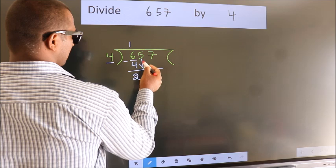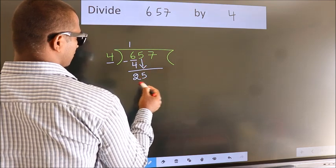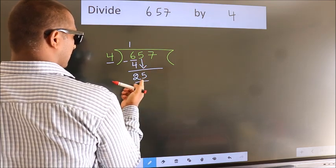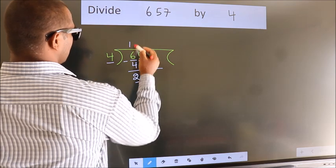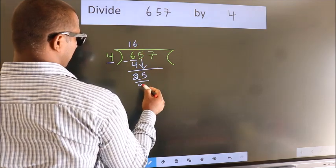Bring down the beside number, so 5 down. So 25. A number close to 25 in the fourth table is 4 times 6, which is 24.